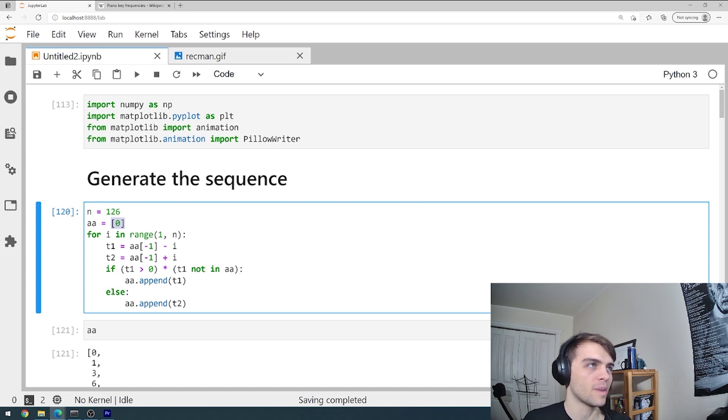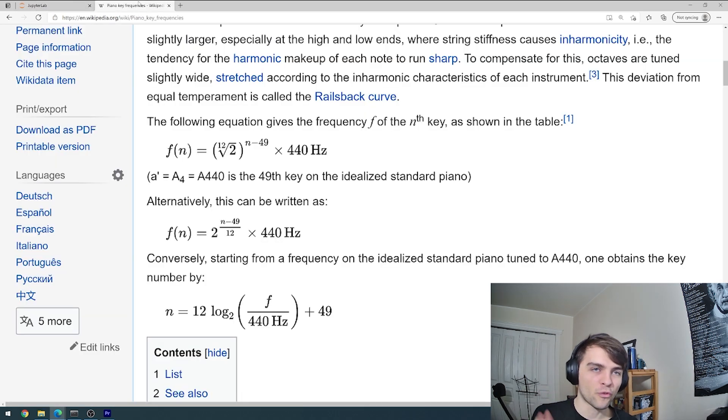All right, guys, I'm back in Python. Generating the sequence of numbers is actually super easy in Python. So say I want to generate 126 terms. The first element is zero and I can just use a little for loop to generate the two options and use a little if statement to decide which term to append. And I know what some of you elitist Python people are going to be mad about me using a for loop in Python. Well, too bad.